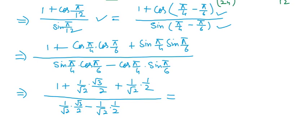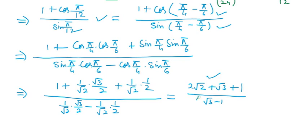After simplification we will have 2(√2 + √3 + 1) / (√3 − 1). We multiply the numerator and denominator by the conjugate of (√3 − 1), that is (√3 + 1) / (√3 + 1).